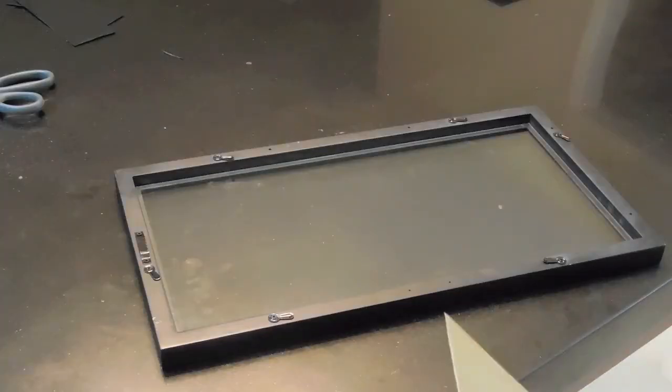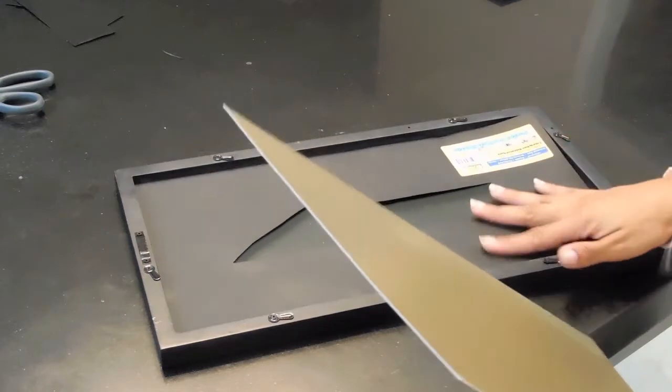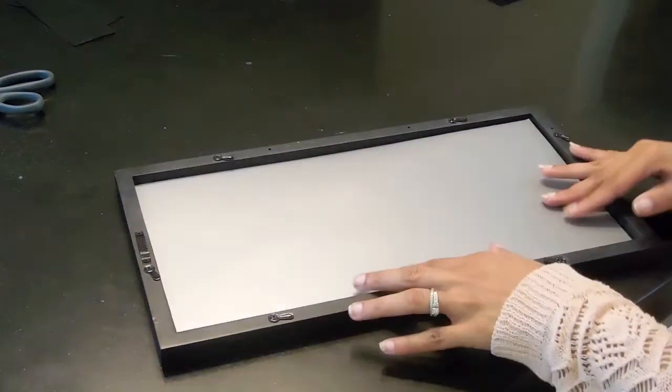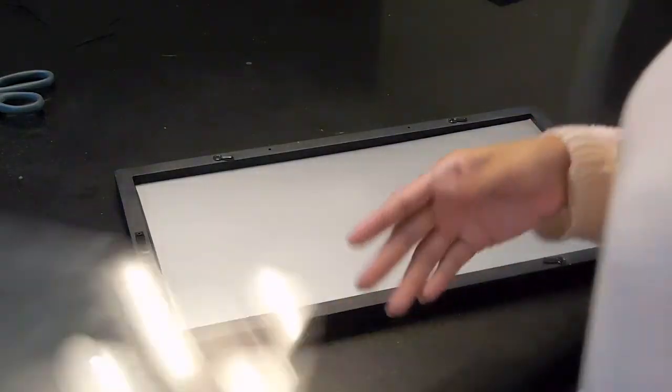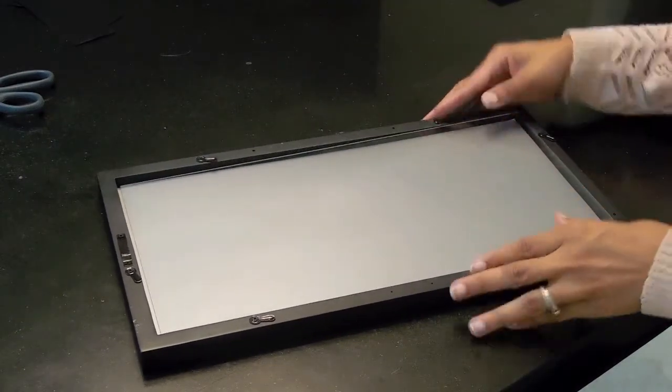All right, you guys, for this last and final step, we are going to grab our picture frame, put our stencil in first, and then our accent color behind that. Close our picture frame, and that is it.